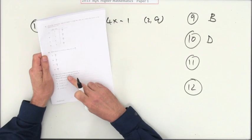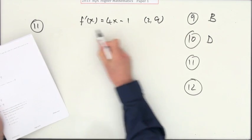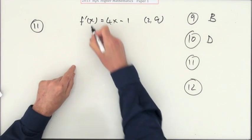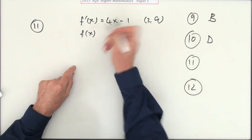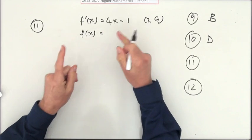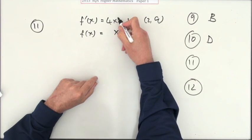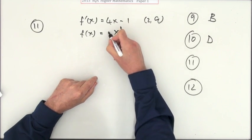Number 11. The curve y equals f(x) is such that this is its derivative, so what's the actual equation? Well, if that's the derivative, to get back again I'll have to undo the differentiation, so I'll be integrating. Instead of taking one off the power, integrating add one onto the power and then divide by that.